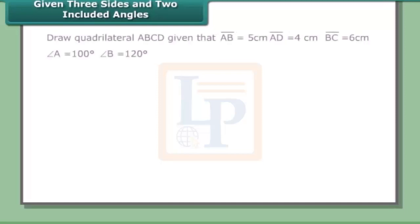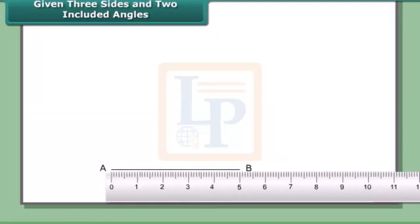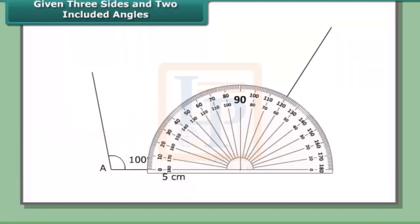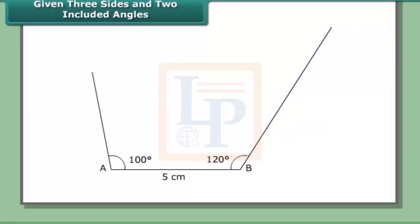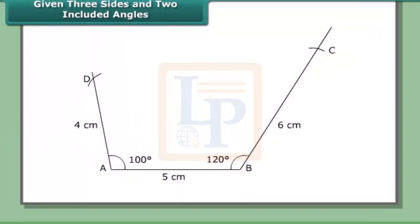Given three sides and the two included angles, draw quadrilateral ABCD given AB = 5 cm, AD = 4 cm, BC = 6 cm, angle A = 100°, and angle B = 120°. Draw AB, then complete the construction to obtain ABCD as the required quadrilateral.